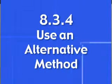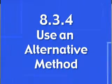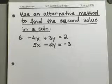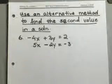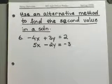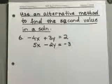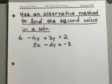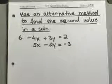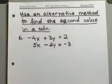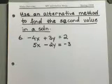What I want to talk about is an alternative method to find the second value in a solution. Sometimes it will be easier, as you will see in these examples, to find the value of the second variable in your solution by using the elimination method twice. We will see why it would be easier to do the elimination method twice instead of substituting one of the variables in the equation.